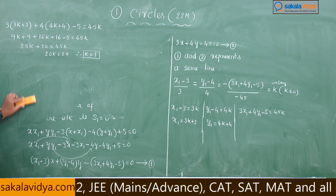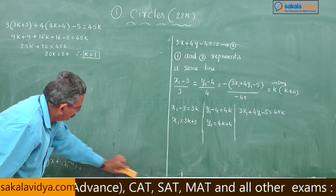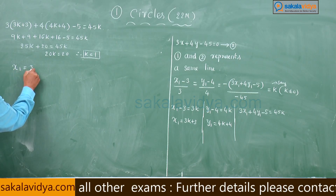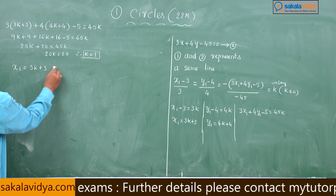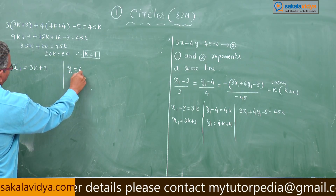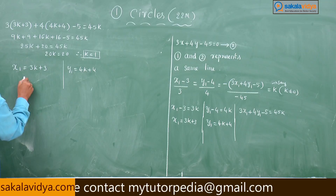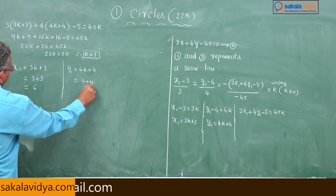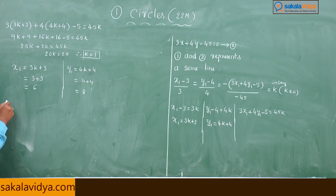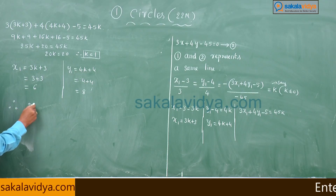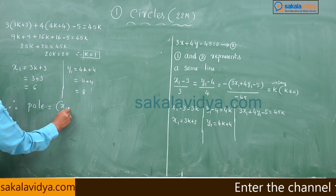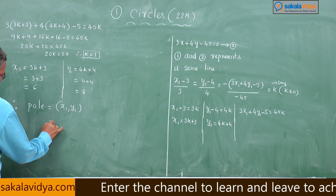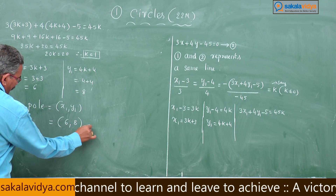Now we can find x1 = 3k + 3 = 3 + 3 = 6, and y1 = 4k + 4 = 4 + 4 = 8. Therefore the pole is (x1, y1) = (6, 8). This is the required answer.